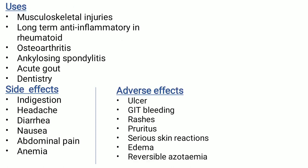Uses of piroxicam: musculoskeletal injuries, long-term anti-inflammatory and rheumatoid conditions, osteoarthritis, ankylosing spondylitis, acute gout, and dentistry. Side effects: indigestion, headache, diarrhea, nausea, abdominal pain, and anemia. Adverse effects: ulcer, gastrointestinal bleeding, rashes on skin, pruritus, serious skin reactions, edema, and reversible azotemia.